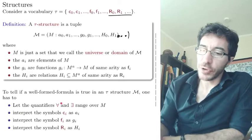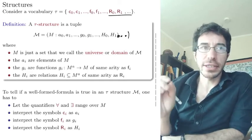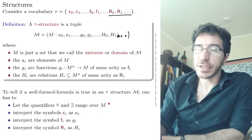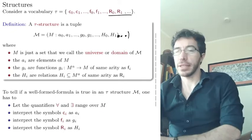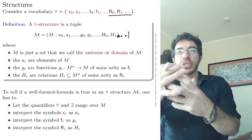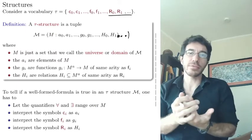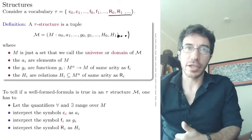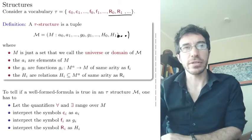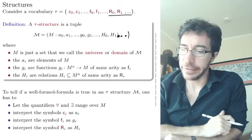So the quantifiers for all and exist, every time we write that for all and exist, they range over the elements of M. So M, this Roman M, is giving us the universe of all objects that we have. So when we say for every x, we mean for every x in the universe. There exists an x, we mean there exists an x in the universe. We're going to see this more formally in the next video.